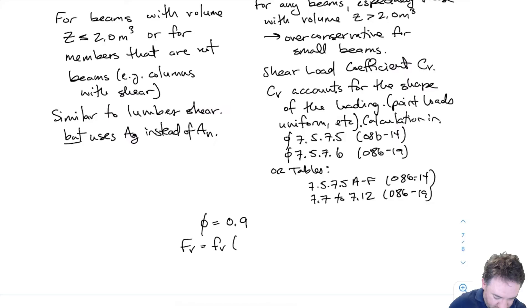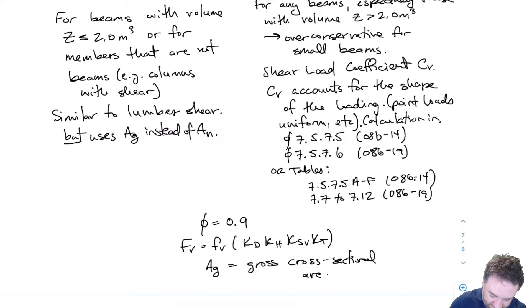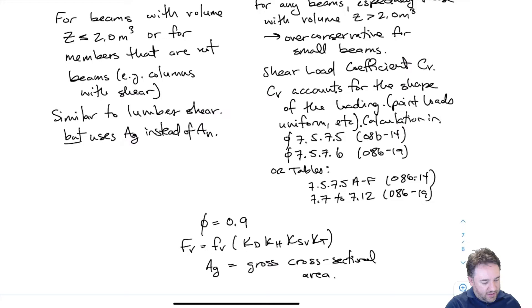Things common to both methods: phi is 0.9, capital FV is small fv times our modification factors KD, KH, KSV, and KT, and AG is our gross cross-sectional area as per usual.